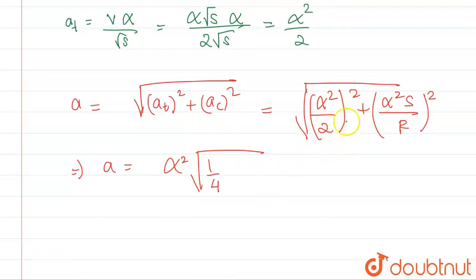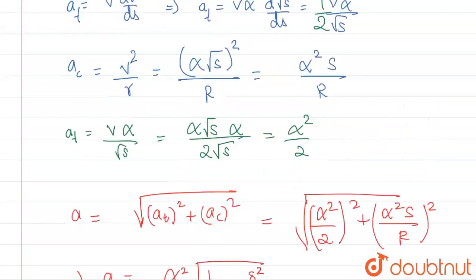This will be 1 by 4, and alpha is out, so this will be s squared divided by r squared. This is our final answer.